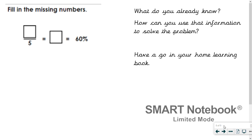Now I'd like you to fill in the missing numbers in this problem. We're given some information but not all of it. We're given 60 percent — this is probably the most useful part — because from that we can find the decimal and the fraction. Notice the fraction is expressed in fifths. Our method would be to put the percentage over 100, then simplify to get the fraction in fifths. Pause, have a go in your home learning book, then come back and we'll talk through the answers.